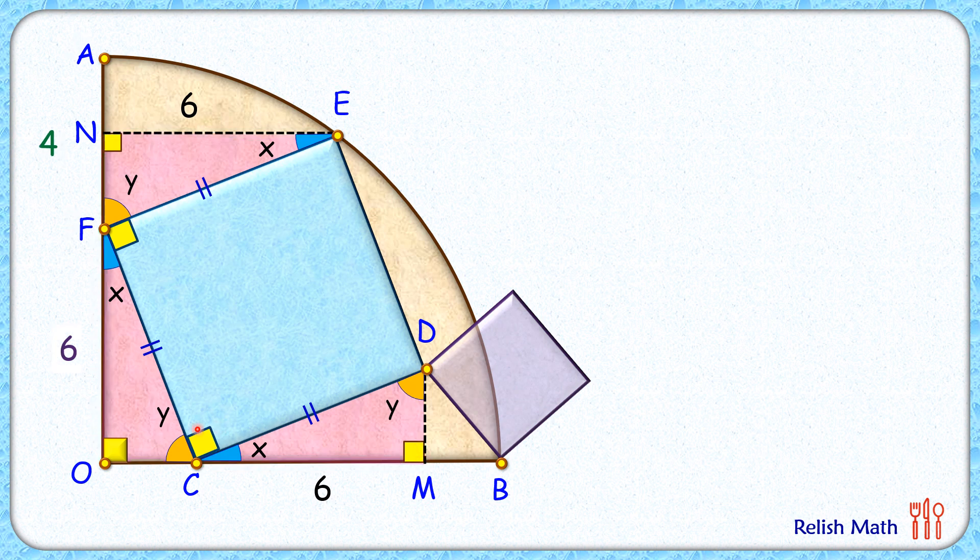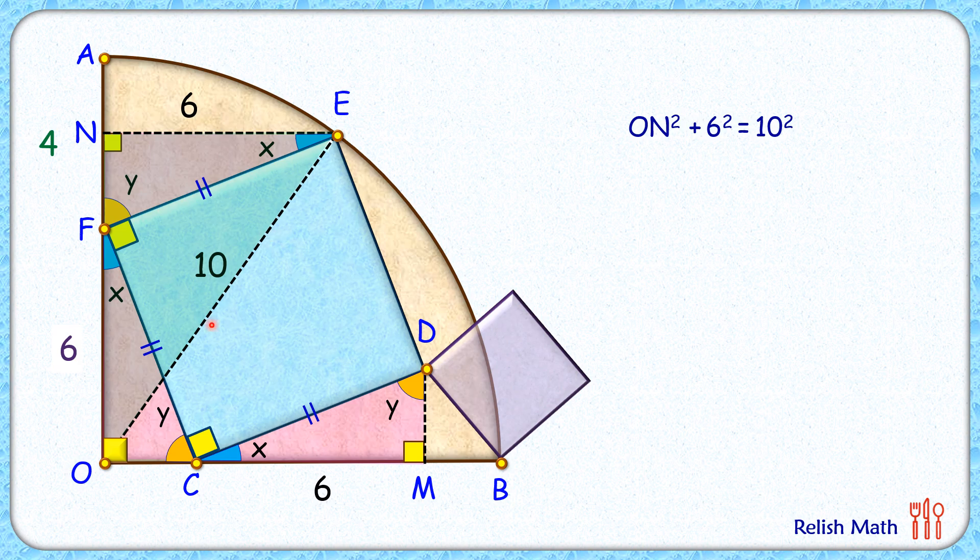Now to solve it further, let's join OE. Now it's given that the radius of quadrant is 10 centimeters, thus OE length will also be 10 centimeters. Now in this triangle ONE, if we apply Pythagorean theorem, we'll get ON² + 6² = 10². Solving it, we'll get ON length as 8 centimeters.